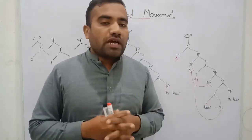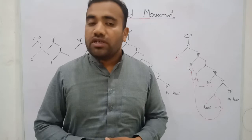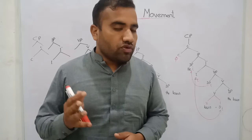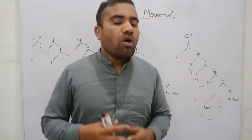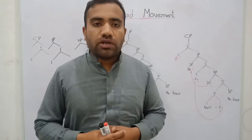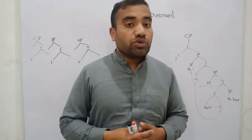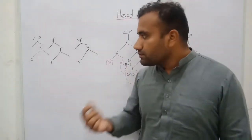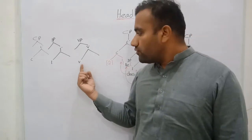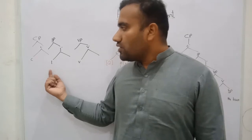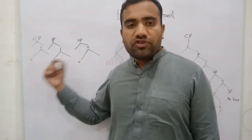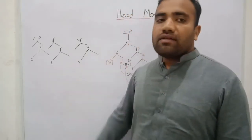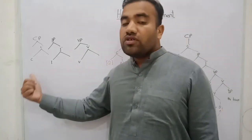Before moving toward our lecture, you should know the core property of every category, every projection — when any word is drawn from the lexicon. What is the structure of this particular word in all languages? This is the projection of VP, this is the projection of IP, and this is the projection of CP. What is the similarity within all these diagrams, all these representations, all these projections?